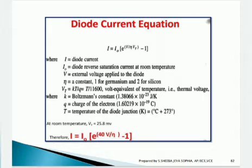k is the Boltzmann constant, q is the charge of the electron, and T is the temperature of the diode junction — all known values. At room temperature, VT equals 25.8 millivolts, so we can find the value: I = I₀ · e^(40V/η) − 1.